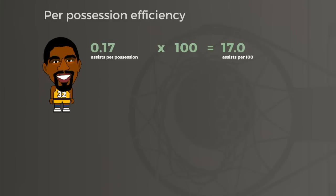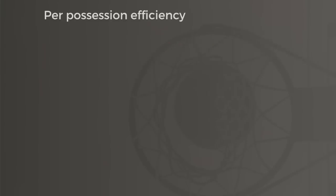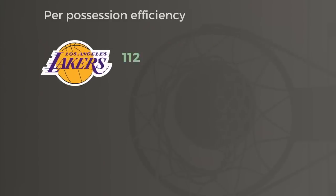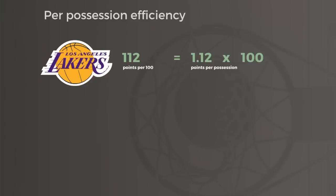It's easier to say he averaged 17 assists per 100 possessions, or that LA's offense scored 112 points per 100 instead of 1.12 points per possession. This per-100 number is now simply known as a team's offensive rating, or overall offensive efficiency.